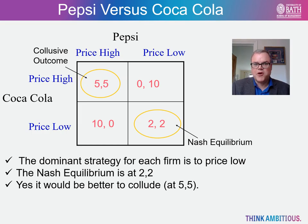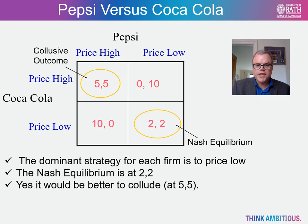We can see that both Pepsi and Coca-Cola have a dominant strategy to price low. A dominant strategy is the best one to play given the likely choices of other firms. Consider Pepsi: the worst possible outcome is profit of zero, arising if they price high and Coca-Cola prices low — in which case Coca-Cola would get 10. This is the bottom left quadrant in the payoff matrix. Likewise for Coca-Cola. Both firms recognize this and will both play the strategy to price low. But if only they could collude and choose the high price strategy, they would both earn profits of five each. However, the incentive to cheat is great — by cheating and pricing low you might earn 10.